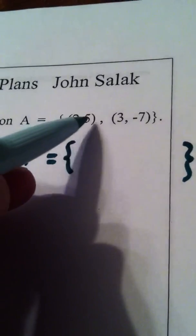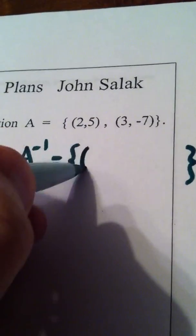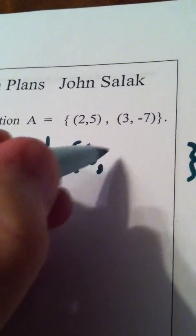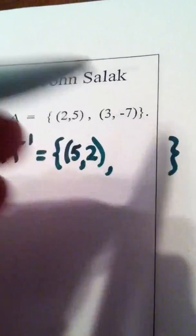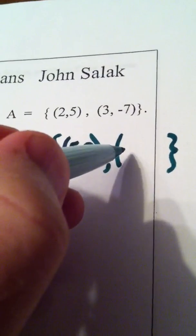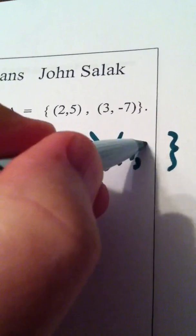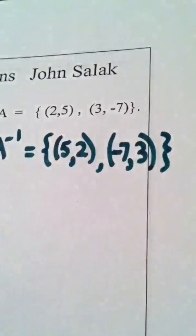Up here, two went in and five came out. Down here, five goes in and two comes out. Up here, three went in and negative seven came out. Down here, negative seven goes in and three comes out.